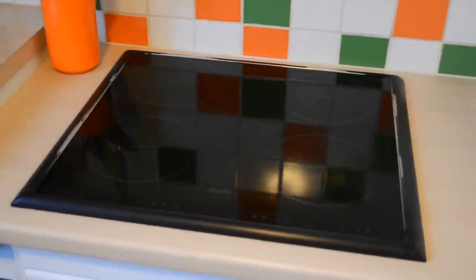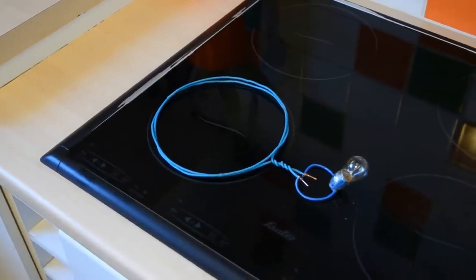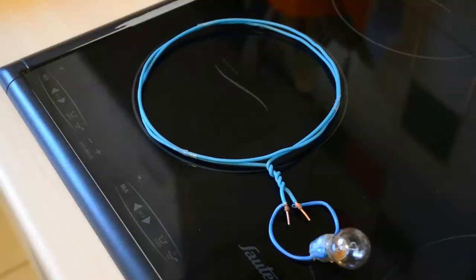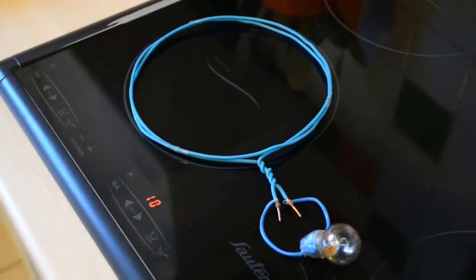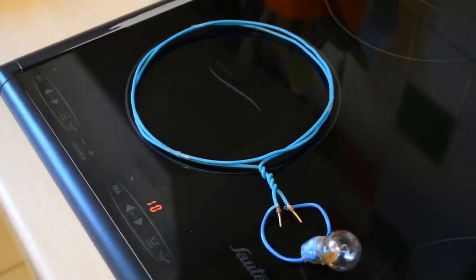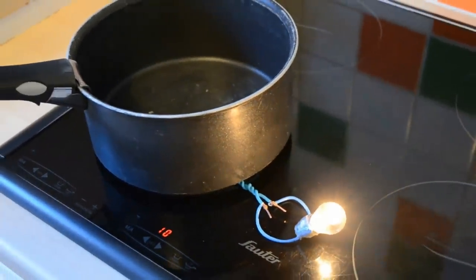We are now going to make the link between our system and induction cooktops that you all know. We will also see if we can light a bulb using the electromagnetic field. The cooktop refuses to work if it doesn't detect enough metal, so we place a pan so that the hot plate starts and the bulb lights up.